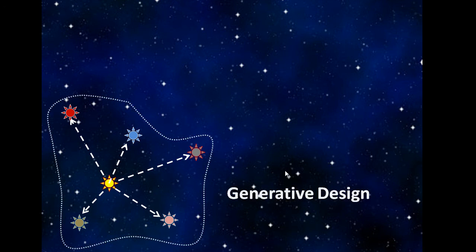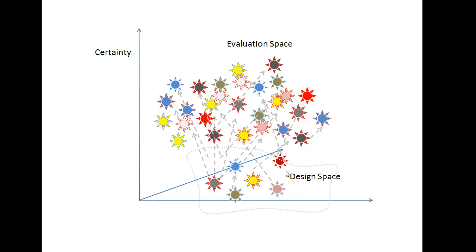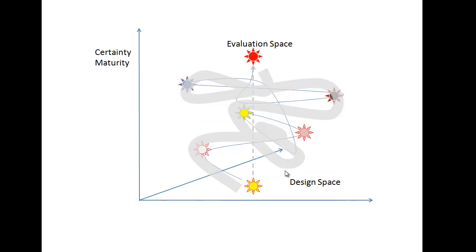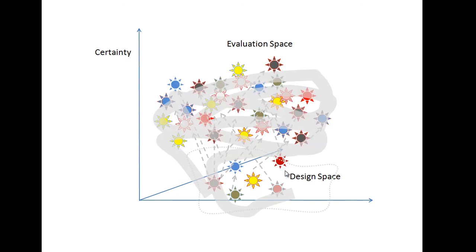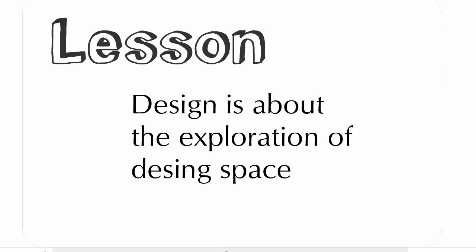What generative design does is that lets you explore a much larger design space. Or in other words, use a single genetic model that represents a much larger design space. This is how exploration will look like in design space, going from low levels of certainty to high levels of certainty. You can see that compared to this, it covers a much larger design space. Design is about the exploration of design space.